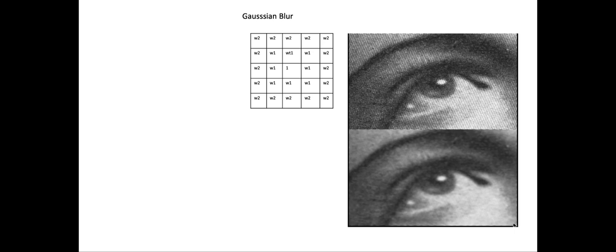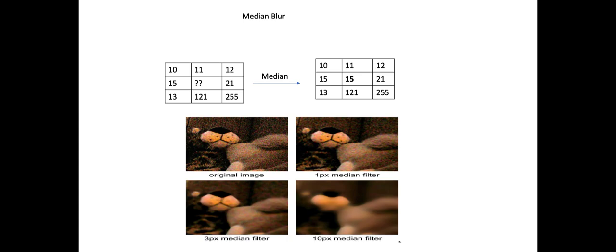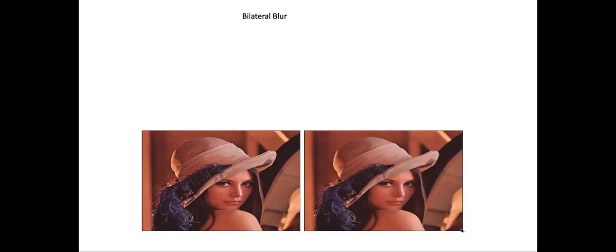We will learn about Gaussian blur, where it's not just a uniform average but a weighted average, and this helps in preserving the edges while still blurring the image. We will also learn about median blur, which is more robust to outliers and very effective at removing salt and pepper noise. We will also learn about bilateral blur, which is a combination of two Gaussian transforms and is very effective at blurring the image while preserving the edges.